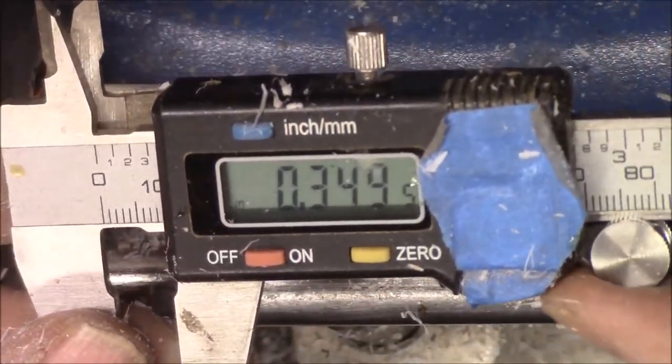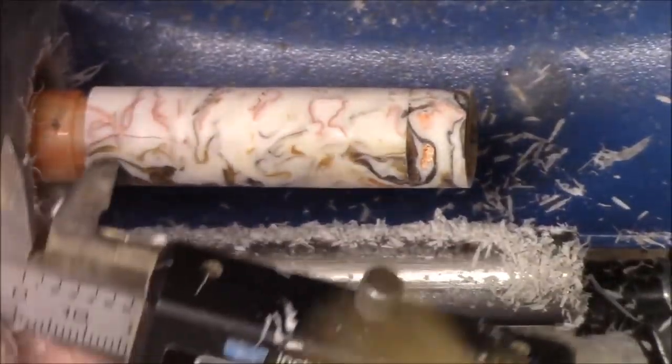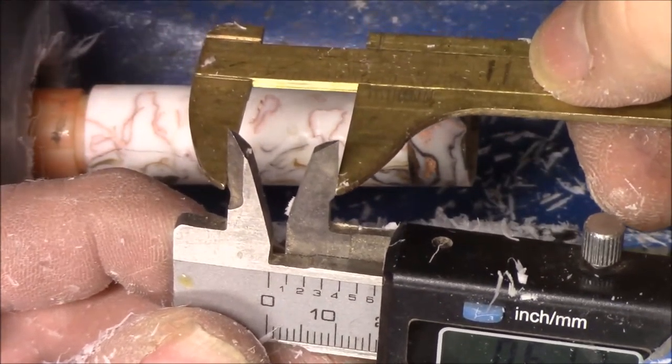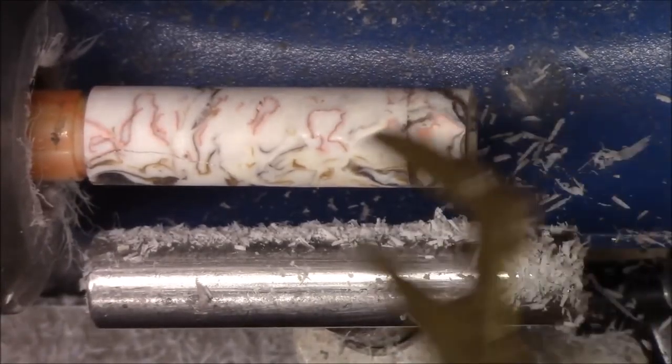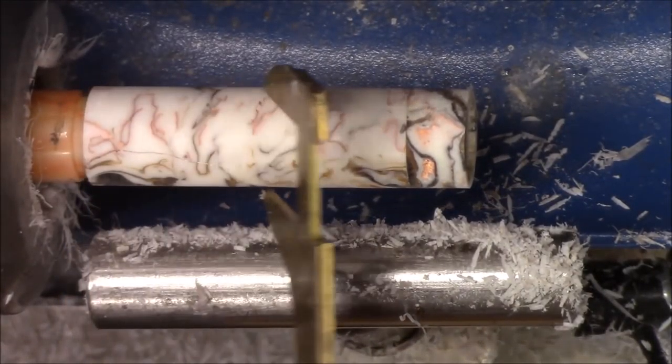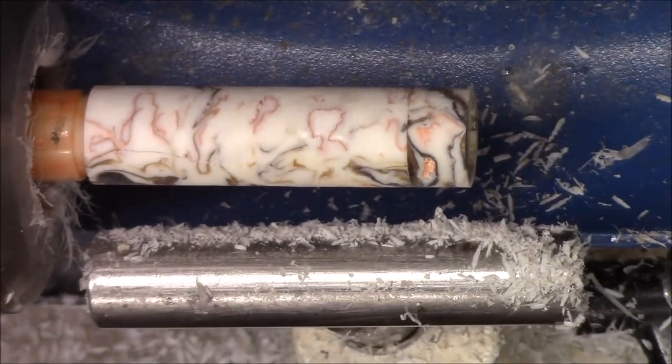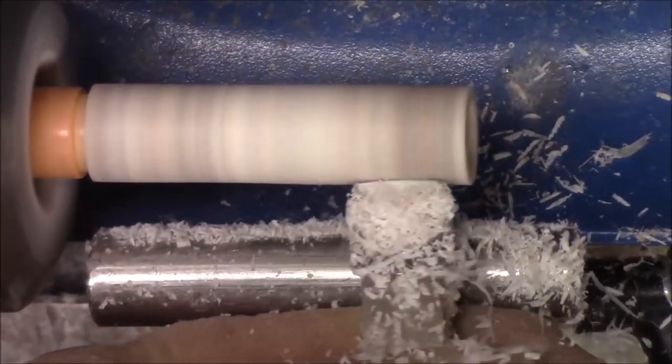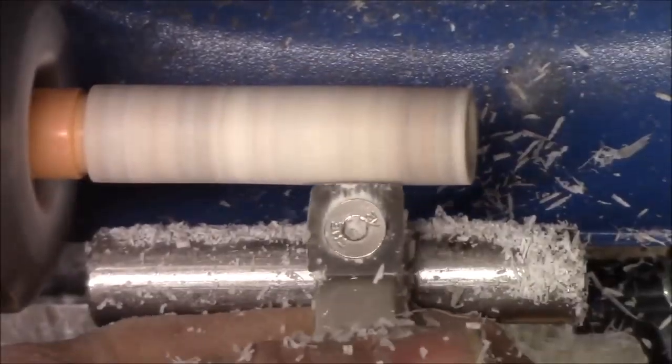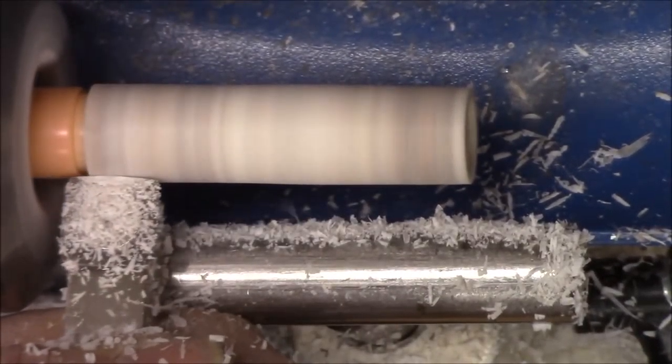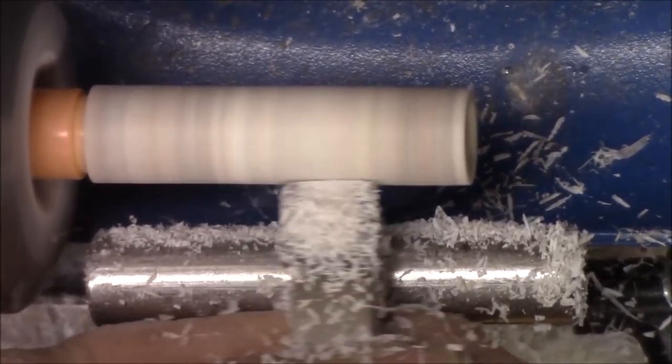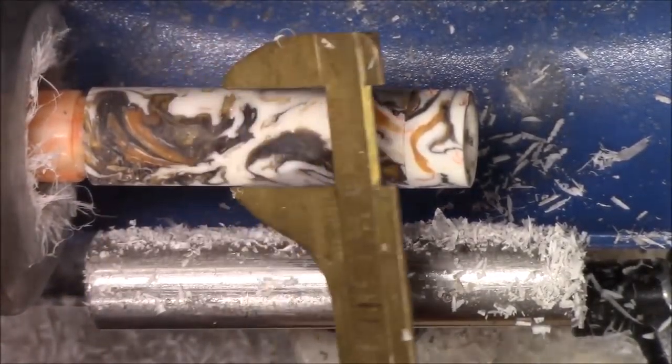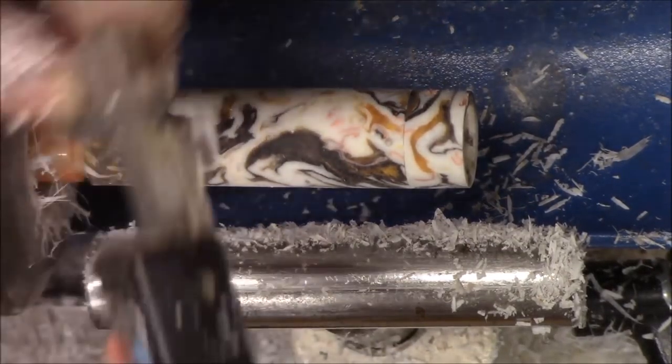I'm going to set the calipers at 613, and then I'm going to set these to that. And this is going to be my go and no go gauge. Okay, we're still a little big. We are real close.